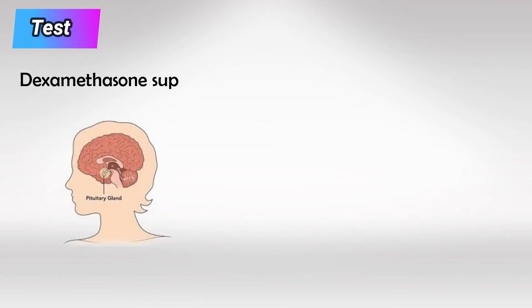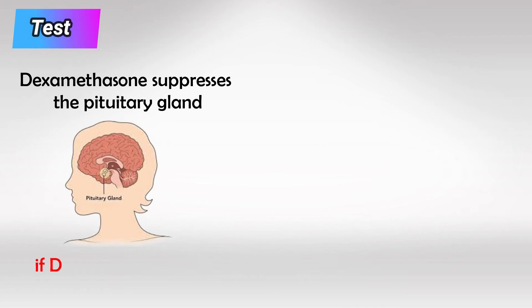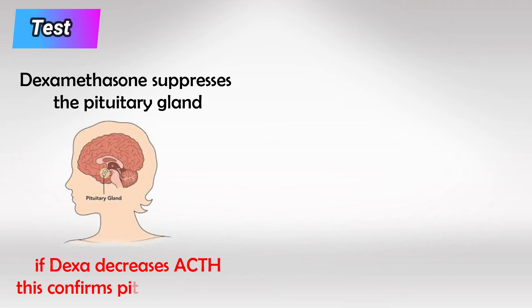A low dose of dexamethasone is known to suppress the pituitary gland. So if a patient has high ACTH resulting in high cortisol levels, and we give them low dose dexamethasone and it results in decreased ACTH and subsequent decreased cortisol, this confirms the pituitary gland to be the source of excess ACTH.